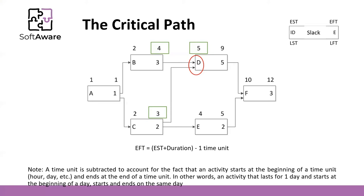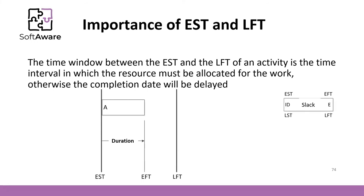Just to note that one time unit is subtracted to account for the fact that the activity starts at the beginning of a time unit — hour, day, and so on — and ends at the end of a time unit. In other words, an activity that lasts for one day and starts at the beginning of the day starts and ends on the same day. The time window between the earliest start time and the latest finish time is where the completion of the task must occur and the resources must be allocated. The difference between the latest finish time and the earliest finish time is the slack — the window within which you can slide the task.